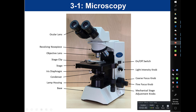We have our light intensity knob, also referred to as the rheostat. Our microscopes also have an on-off switch. These are the various parts of the microscope that you need to be familiar with.